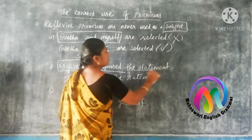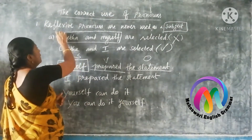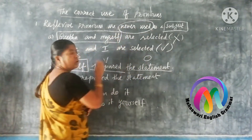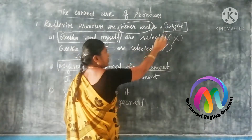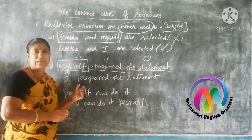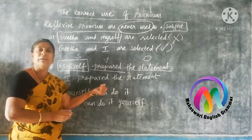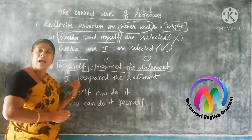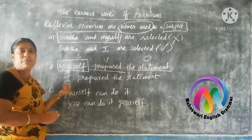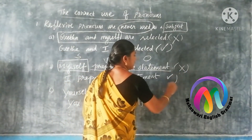Since 'myself' is a reflective pronoun, we cannot use it in the place of subject. So the correct one is 'I prepared the statement,' or you can say 'I myself prepared the statement.' The word 'I' is in the place of subject, so the correct usage is 'I prepared the statement.'